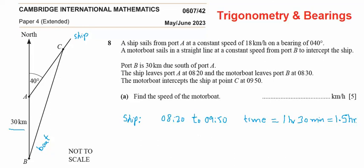Okay, then later we will see the boat information, but now we know that the ship is moving with constant speed of 18 km per hour.